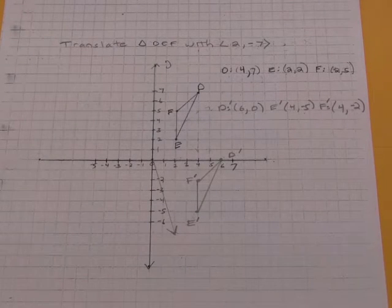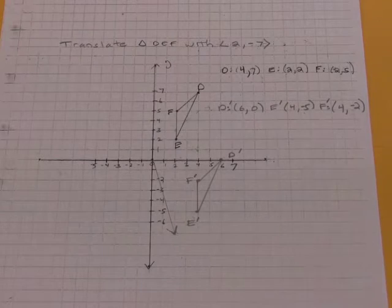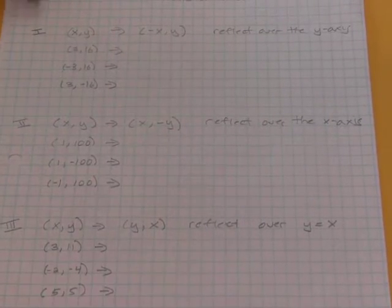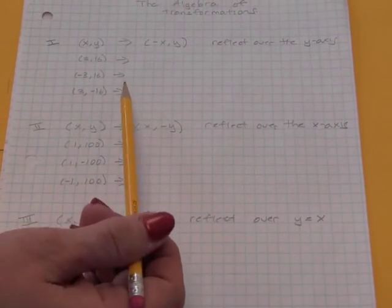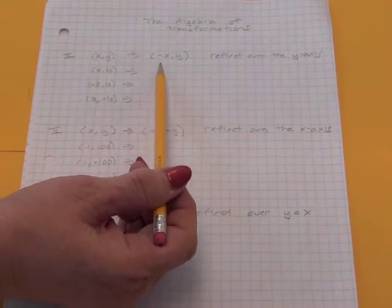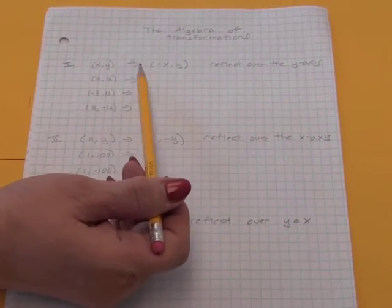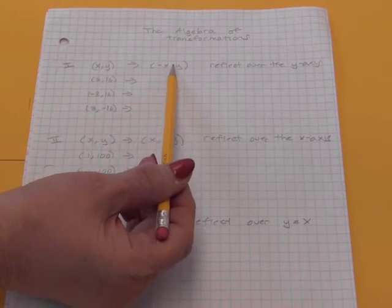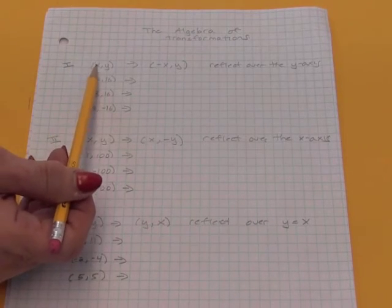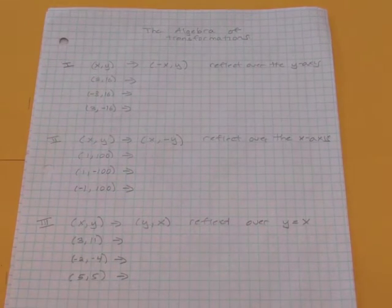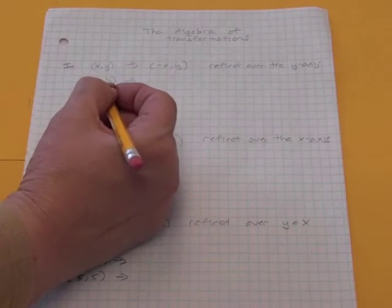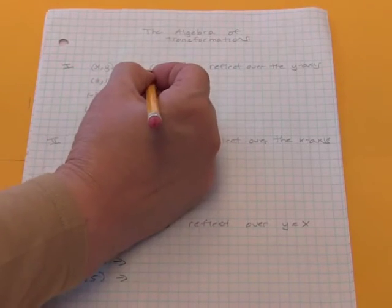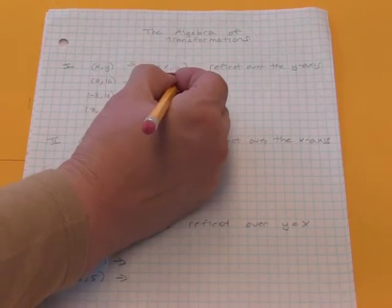Okay, finally, we're just going to go over some of the algebra of these rules to make sure that we understand how to apply them. When we looked at these reflections, we said that the rule for reflecting over the y-axis was that x, y went to negative x, y. This doesn't mean that the x-coordinate becomes negative. It simply means that whatever the old x-coordinate was, we multiply that by negative 1. So if we started out with the point 3, 16, we took the x-coordinate, multiplied by negative 1, negative 3, and we left the y-coordinate the same.